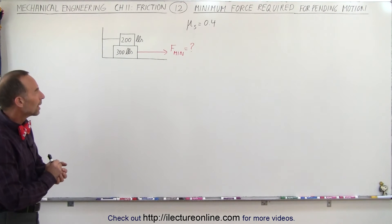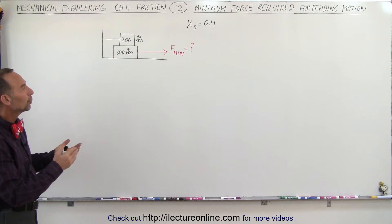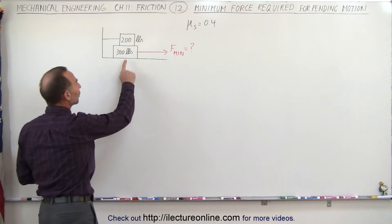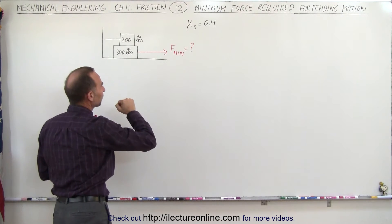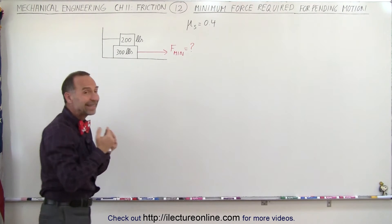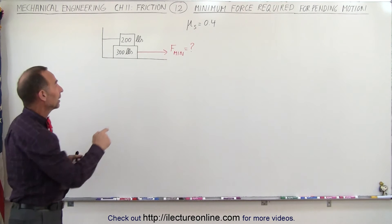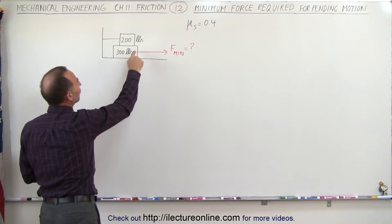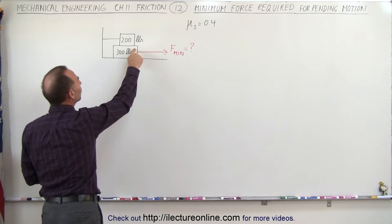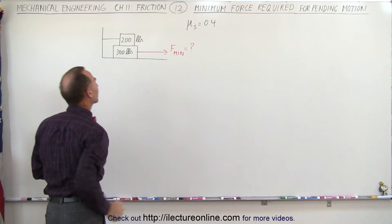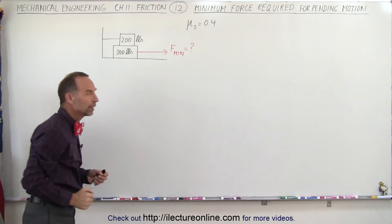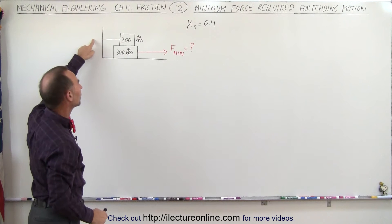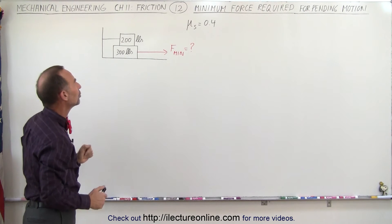Welcome to Electron Line. In this example we're trying to find the force required to get the 300 pound block to start moving. What is keeping that block from moving? It is the friction between the block and the floor, and the friction between this block and the block resting on top of it. This block cannot move because it's attached to the wall — it's prevented from moving.